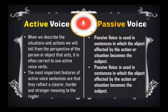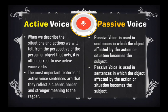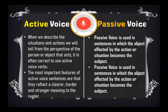When we talk about the active voice, when we describe the situation and actions told from the perspective of a person or the object that acts, it is often correct to use active voice verbs. The most important feature of active voice sentences is that they reflect a clearer, harder, and stronger meaning to the reader. The direct statement of a situation is always considered under active voice.